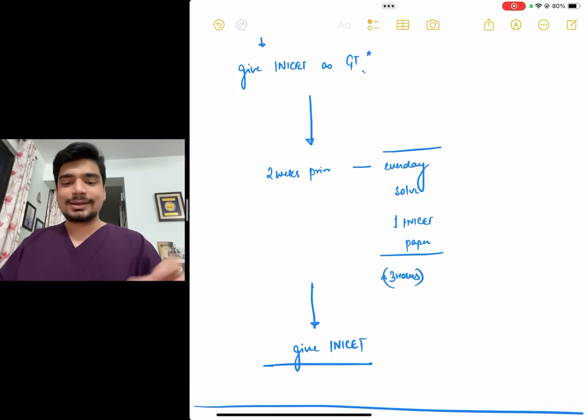In the last seven days building up to that or last 10 days building up to that, solve one INICET paper as a GT. What will happen because of that is you'll have an excellent GT practice also in the run-up to your NEET PG and at the same point of time since you have revised the past 4-5 year papers of INICET if you give one paper every day.